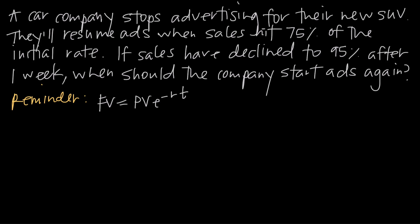In this video, we're talking about sales decline, which is just another application of this exponential growth and decay function. In this particular problem, a car company stops advertising for their new SUV. They want to resume ads when sales hit 75% of their initial rate. So assuming sales are 100% right now, when sales decline to 75%, that's when they want to start running ads again. If sales have declined to 95% of the initial rate after just one week, when should the company expect to start running their ads again?